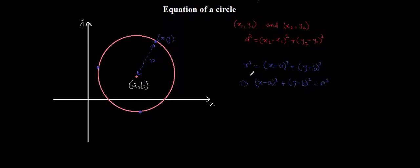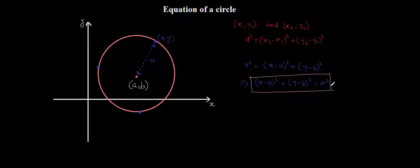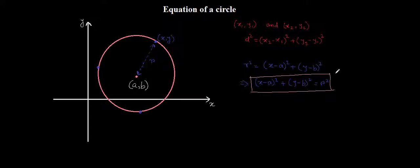Writing an equation in this form is in fact the general equation of a circle. The general equation of a circle is: x minus the x-coordinate of the center, whole square, plus y minus the y-coordinate of the center, whole square, is equal to the radius squared. This is the general equation of a circle.